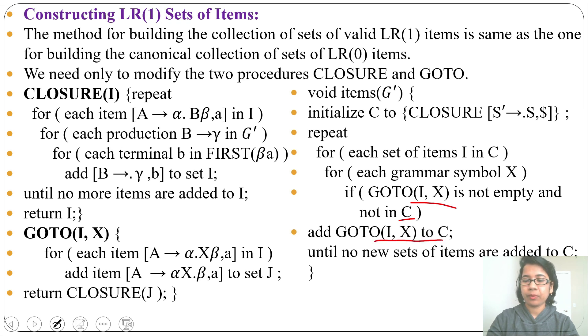Until no more new set of items are added to C. So set of items means some states. One state will contain some set of items. This is just the theoretical part, how you can find CLOSURE and GOTO. When I will explain with example, you can better understand this.